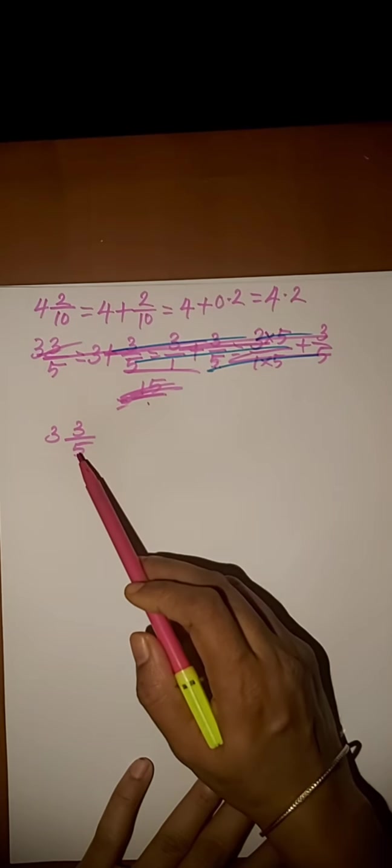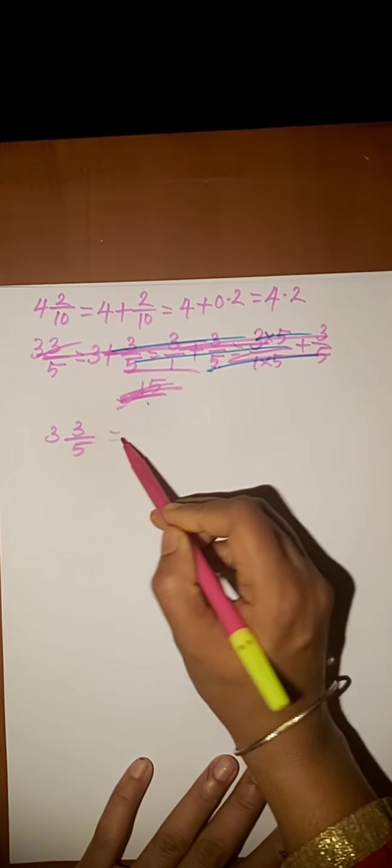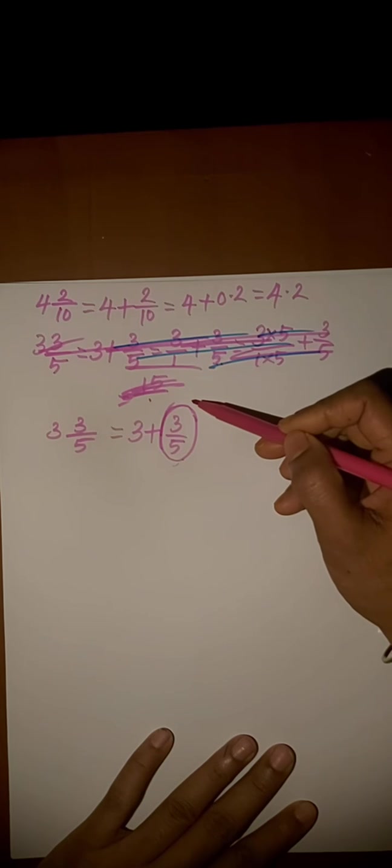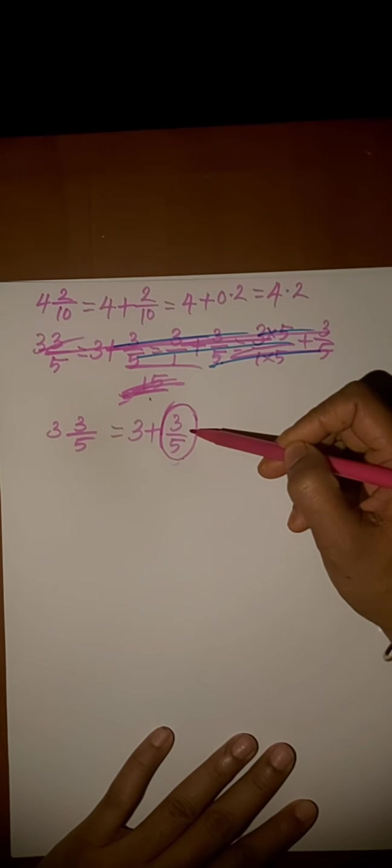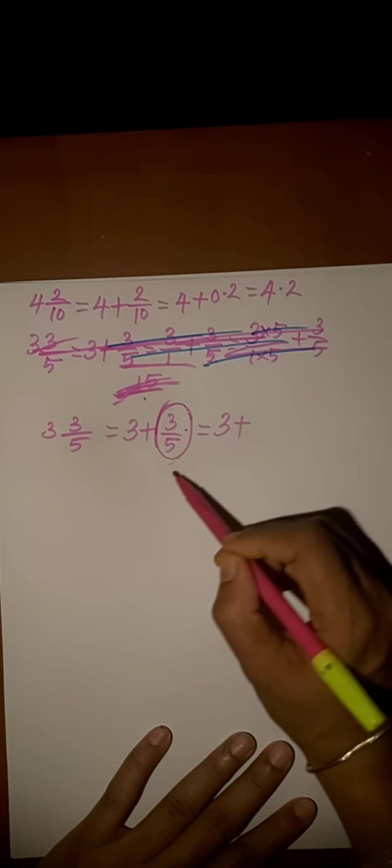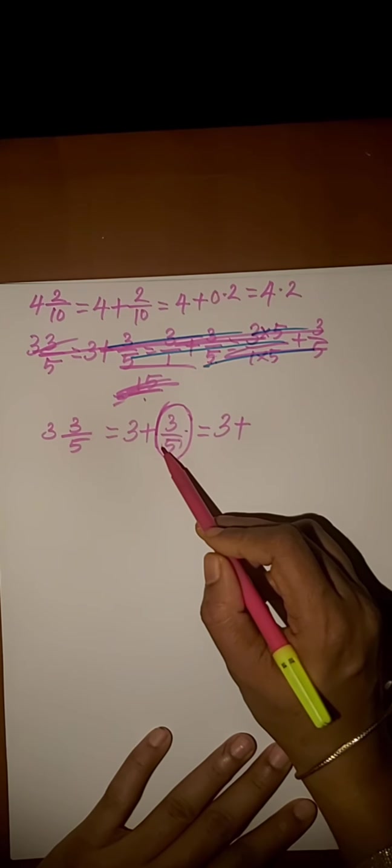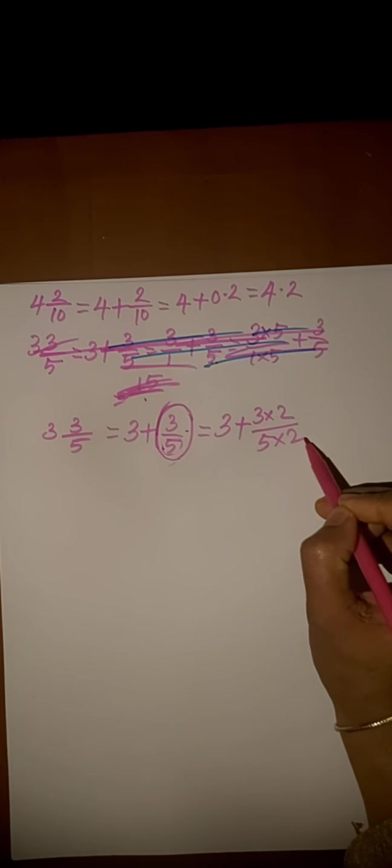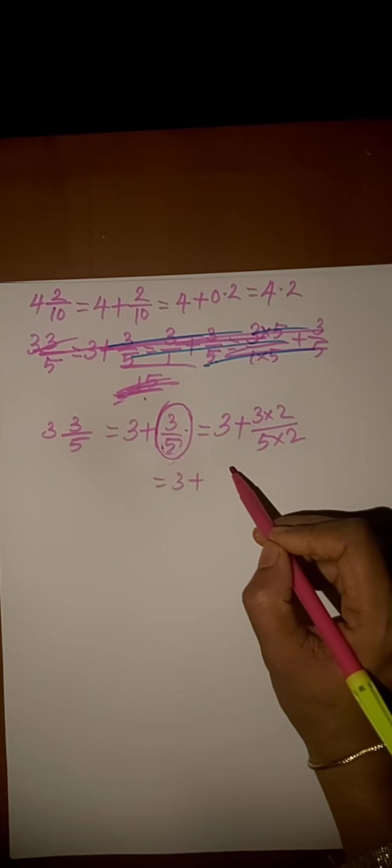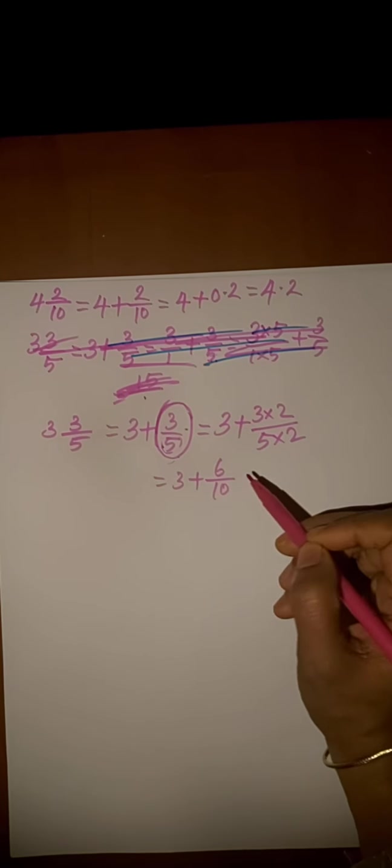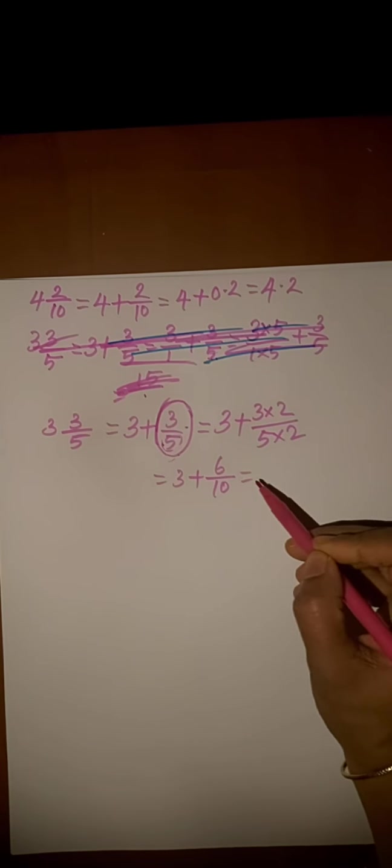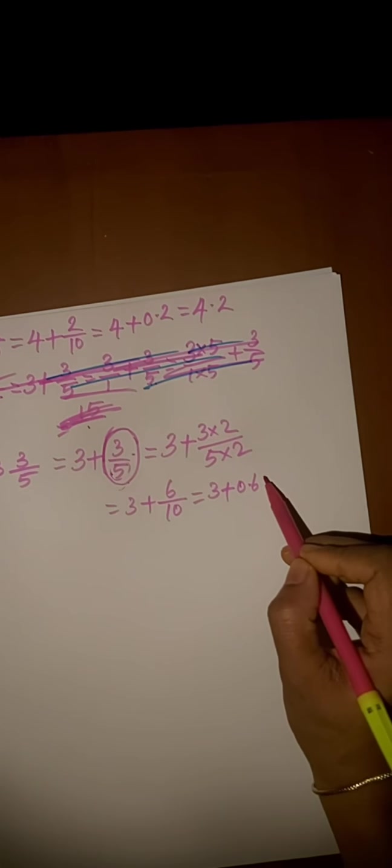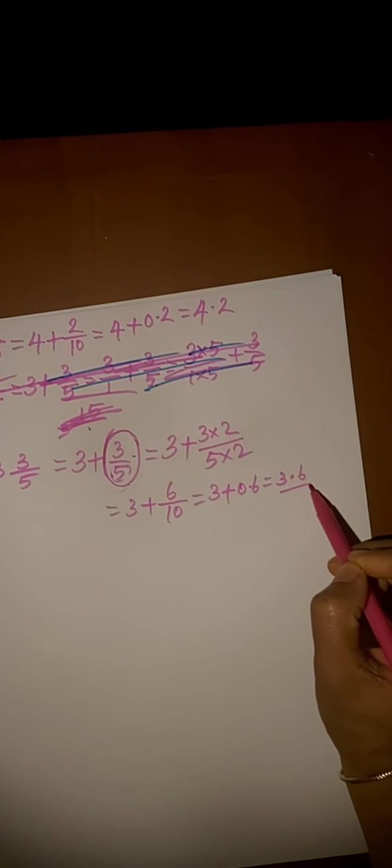Next question, 3 and 3 by 5. First, we write 3 plus 3 by 5. Next, we find the equivalent fraction with denominator 10. Here, denominator is 5. 5 into 2 is 10. We multiply by 2. 3 plus 3 into 2 is 6 by 5 into 2 is 10. 6 by 10. Here, 6 by 10 means 0.6. 3 plus 0.6, we get the answer 3.6.